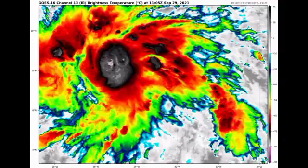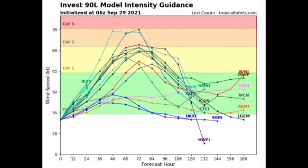Previously we expected both invests to become tropical cyclones since chances for both were really high, but now 91L is definitely failing. As for what our models are expecting for Invest 90L, all agree it will strengthen into a tropical storm, and most of those agree it will eventually become a Category 1 hurricane. Three of the models are expecting it to strengthen into a Category 2. Unfavorable factors — cooler ocean temperatures, wind shear, and dry air intrusion from Saharan dust — will inhibit further intensification.